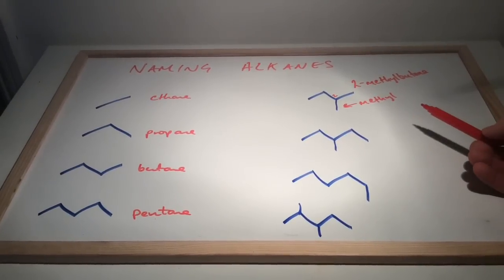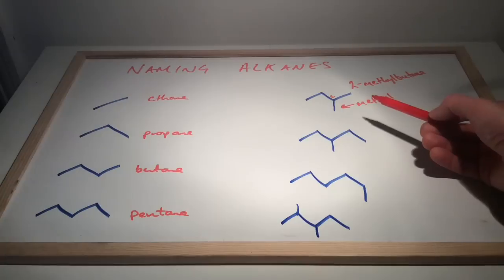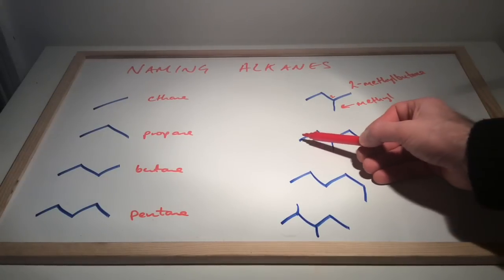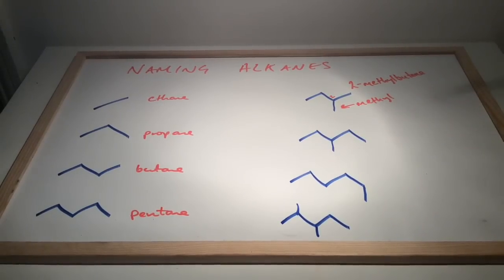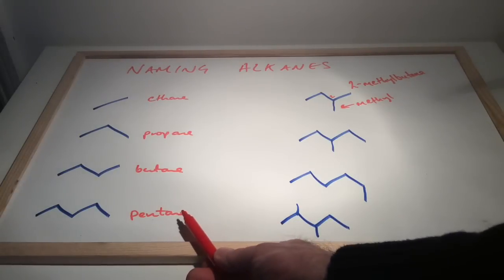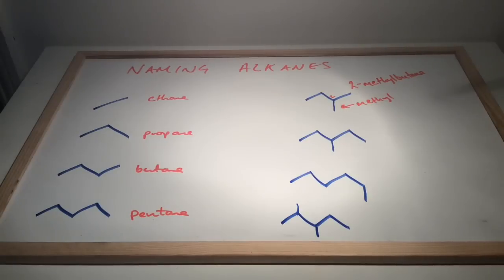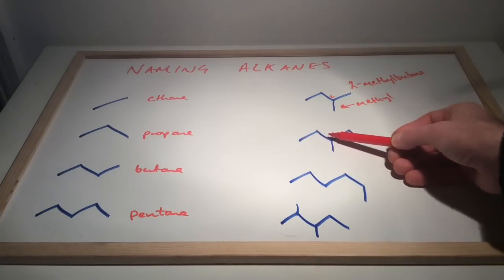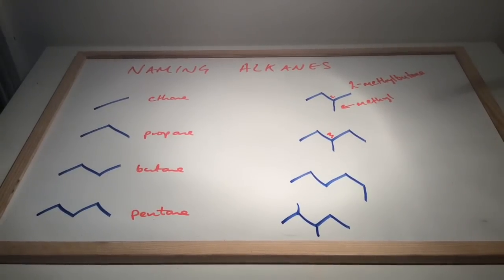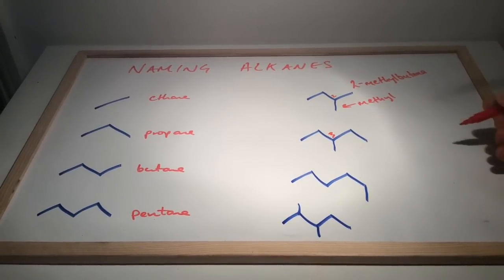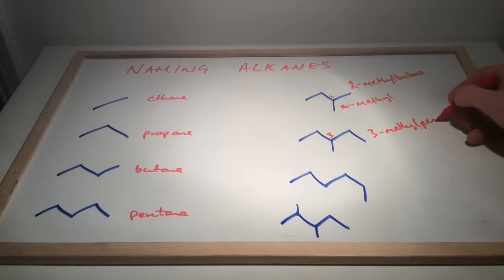So this one here, what's the longest continuous chain? We've got one, two, three, four; one, two, three, four; or one, two, three, four, five. So it's obviously this chain of five, so it's going to be based on pentane. There's a methyl group—which carbon is it on? Is it on carbon number one, two, three, or one, two, three? It's on carbon number three. So this is called 3-methylpentane.